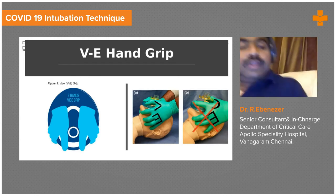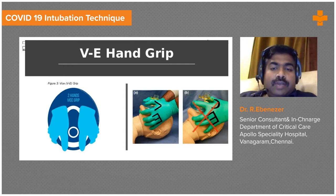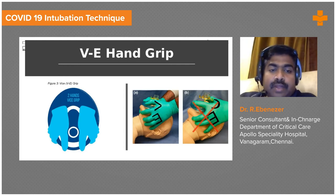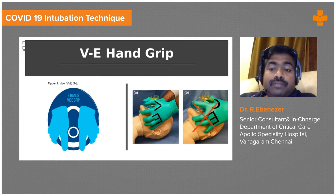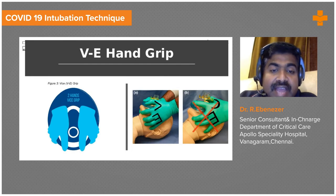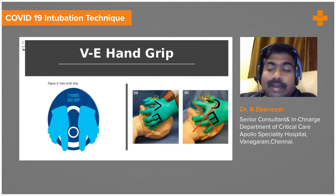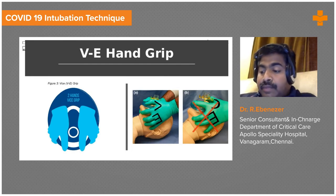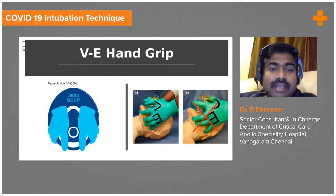The hand grip you should choose is the VE hand grip — a two-handed grip. Previously we used the CE hand grip, but now we are going to use a two-handed VE grip. This will create a much better seal, which is very important.